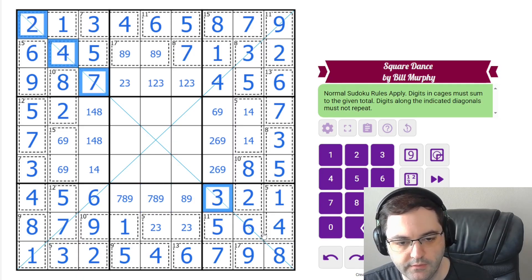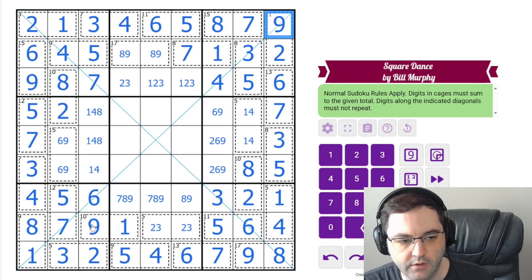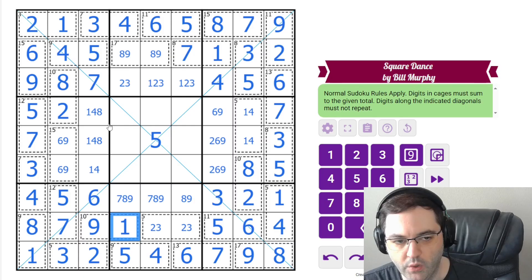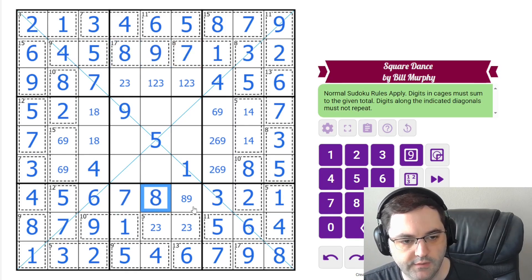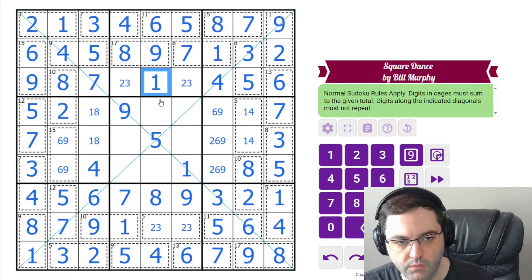This diagonal has 2, 4, 7, 3, 6, 8. So it's missing 1, 5, and 9. But this diagonal already has 1 and 9. So the 5 goes in the middle. But 1 can't go here. So this is 9, 1 like this. That's going to resolve a few things. The 9 looks up here. And we have 7, 8, 9 here. This is not 1, so this is the 9 here.